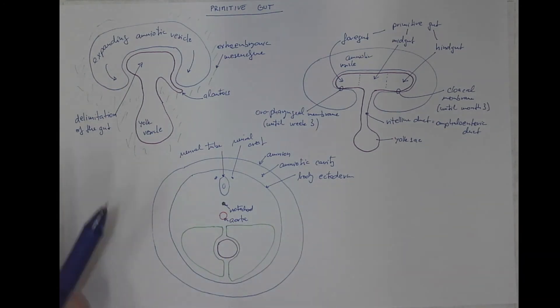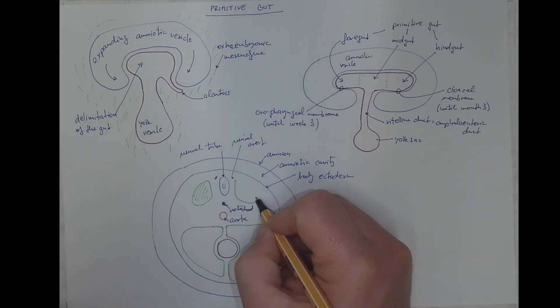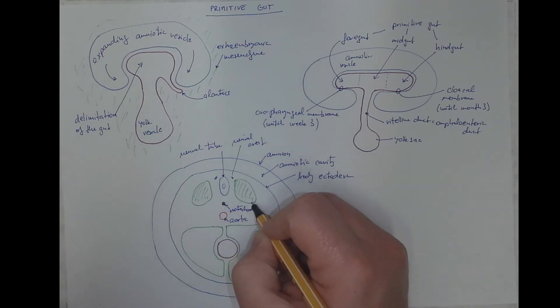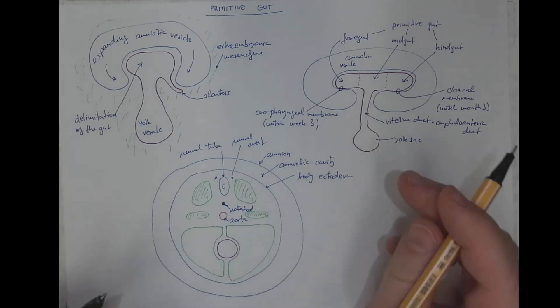Let me also add the body segments called somites, the mesoderm of the somites, and moreover the intermediate mesoderm that will give rise to the urinary system.